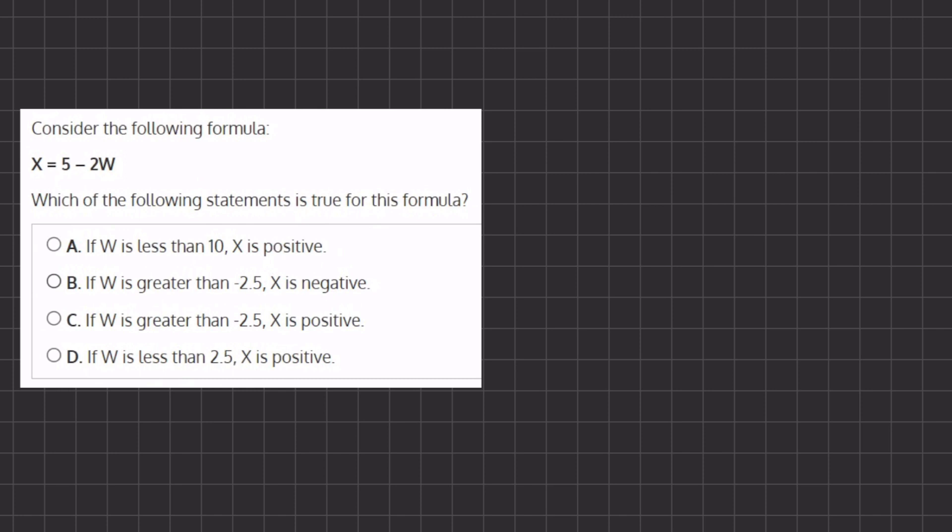Alright, let's start off with A. If W is less than 10, X is positive. So let's pick a number that is less than 10. Let's pick the number 5. We have X equals 5 minus 2, and instead of W, we'll plug in a number that's less than 10, which is 5.